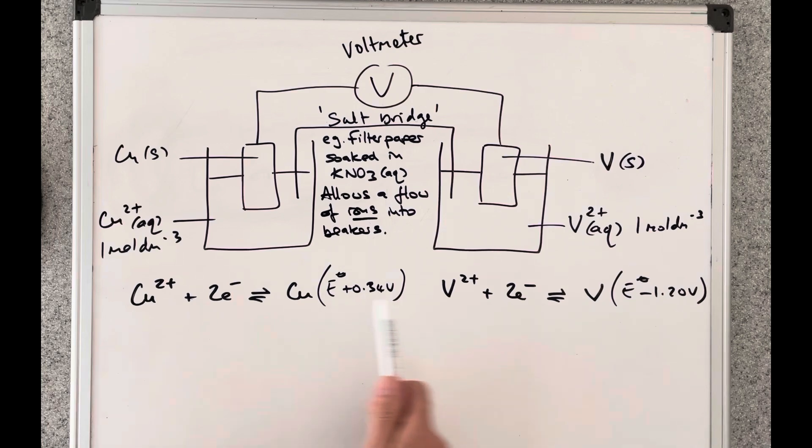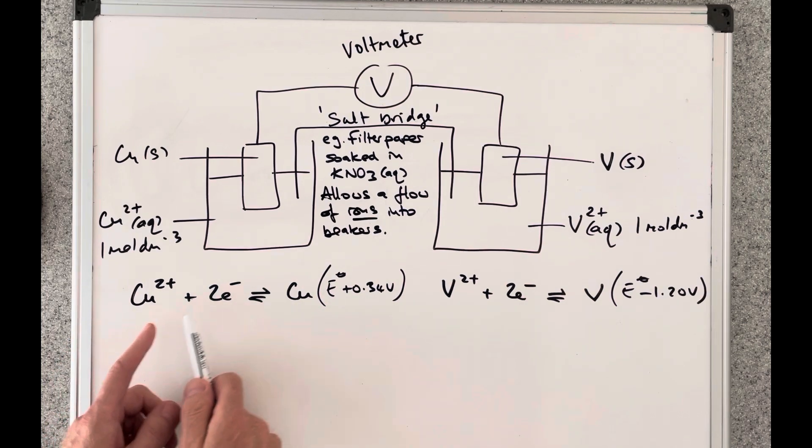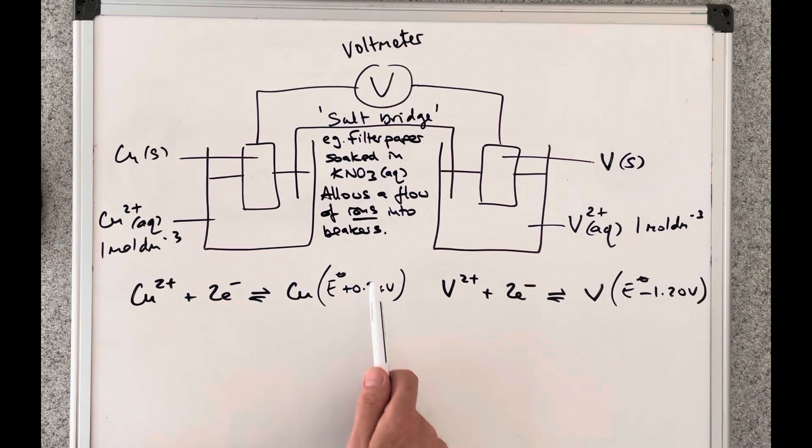So you'll notice that I've written up the half equations for the two half cells. Remember these are written as reduction processes so they involve the gain of electrons and I've put in brackets there the standard electrode potential values for these two half cells.